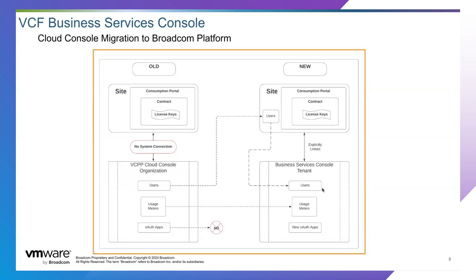In addition to migrating users and usage meters, we will also be enabling partners to interact with experiences via API. If partners have already integrated with API as part of the VCPP Cloud Console organization, they will have to create new OAuth apps in the new VCF Business Services Console tenant. As the OAuth apps are very specific to the platform they were created on, migration is not possible. New OAuth apps will be able to be created, and APIs will be available for usage meter registration and management.